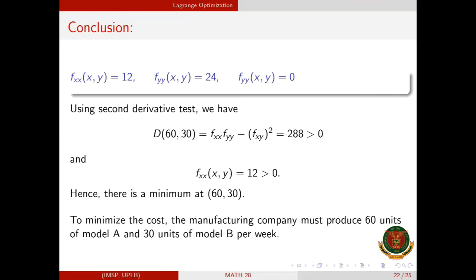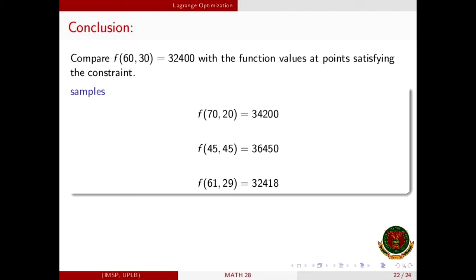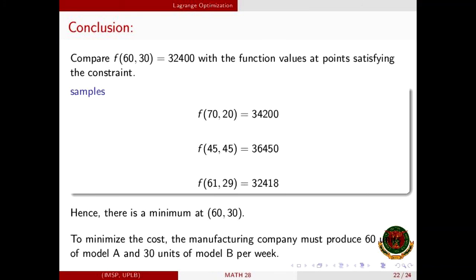To minimize the cost, the manufacturing company must produce 60 units of Model A and 30 units of Model B per week. We also compare f(60, 30) with other points satisfying the constraint x + y − 90 = 0, such as (70, 20), (45, 45), or (61, 29). As we can see, f(60, 30) is the least among them, confirming that F has a minimum value at (60, 30).